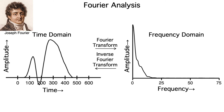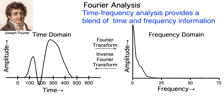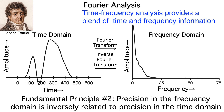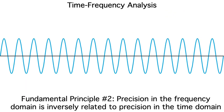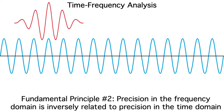However, standard Fourier analysis completely gets rid of time. Time-frequency analysis gives us a blend of time and frequency information. Remember that precision in the time domain is inversely related to precision in the frequency domain. But if we give up some precision in time and some precision in frequency, we can have a little of each. The basic idea is that, instead of using infinite duration sine waves, we can reconstruct a time-domain waveform by summing together a bunch of wavelets.